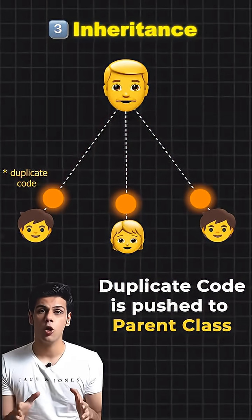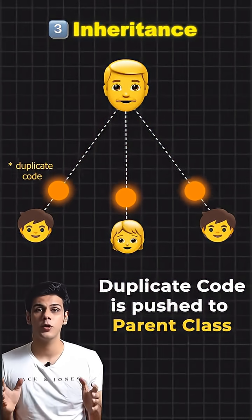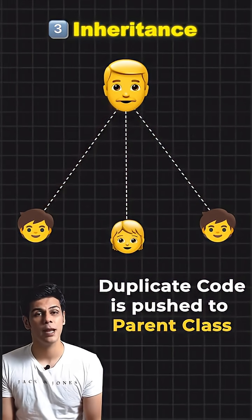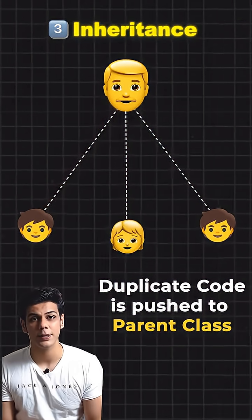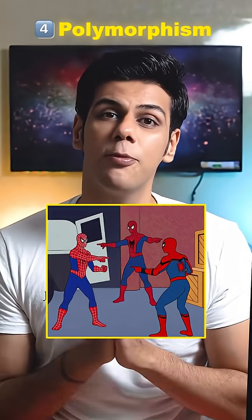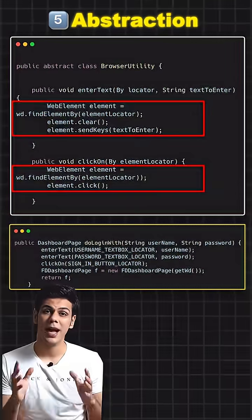When you have a lot of code duplication, you can reduce it with the help of inheritance. We use the same method name to perform different operations with the help of polymorphism.